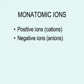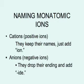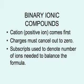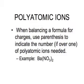We'll leave Fred to think deep thoughts, but let's review. Positive ions or cations have lost one or more electrons. Negative ions or anions have gained at least one electron. Cations keep their names — add ion. Anions drop their endings and add -IDE, as in chloride. For two-part binary compounds, cations come first, charges must cancel out to zero, and subscripts are used if you need more than one ion to balance. For polyatomic ions, use parentheses to indicate how many of the polyatomic ions you need if it's more than one.